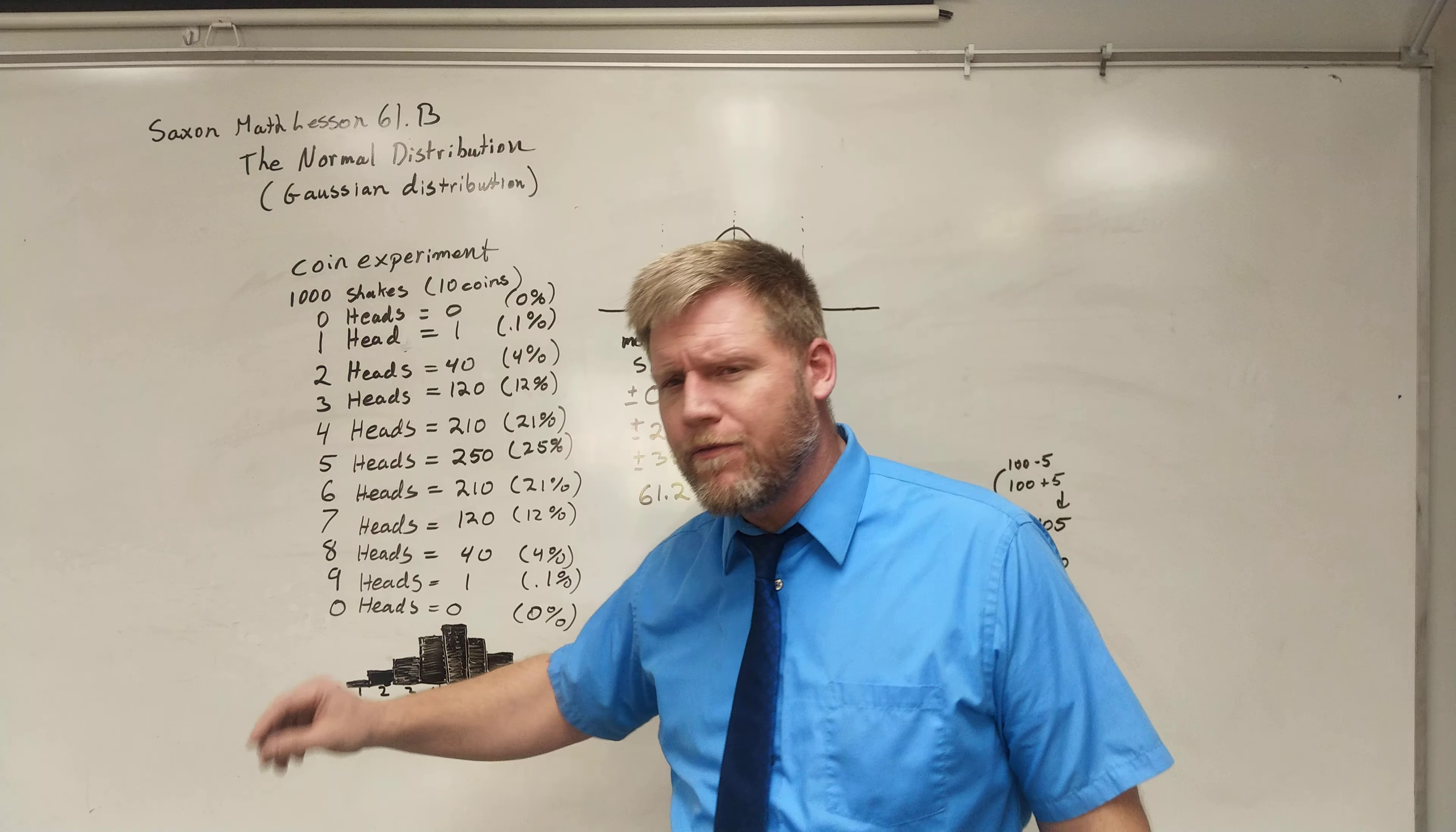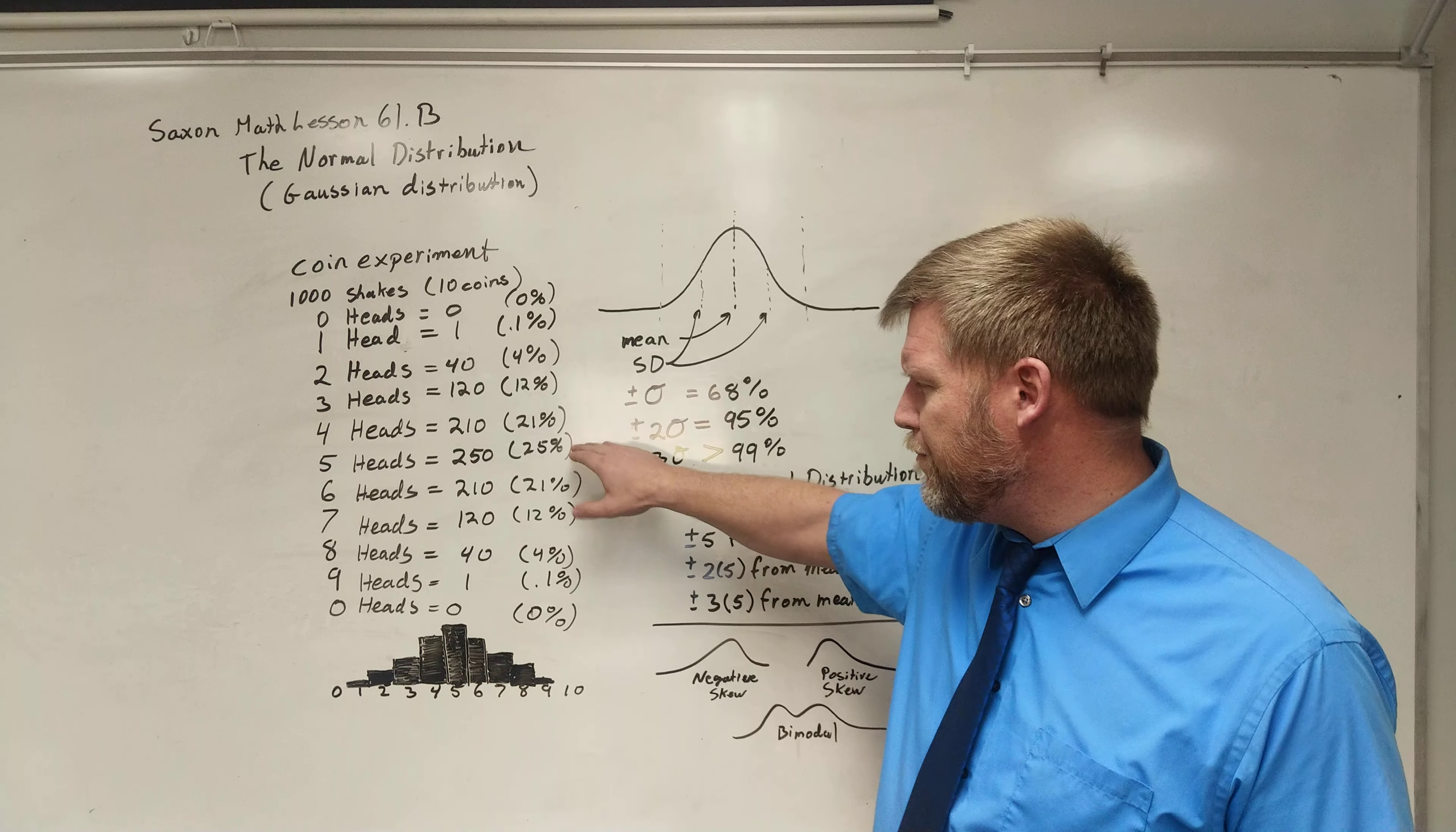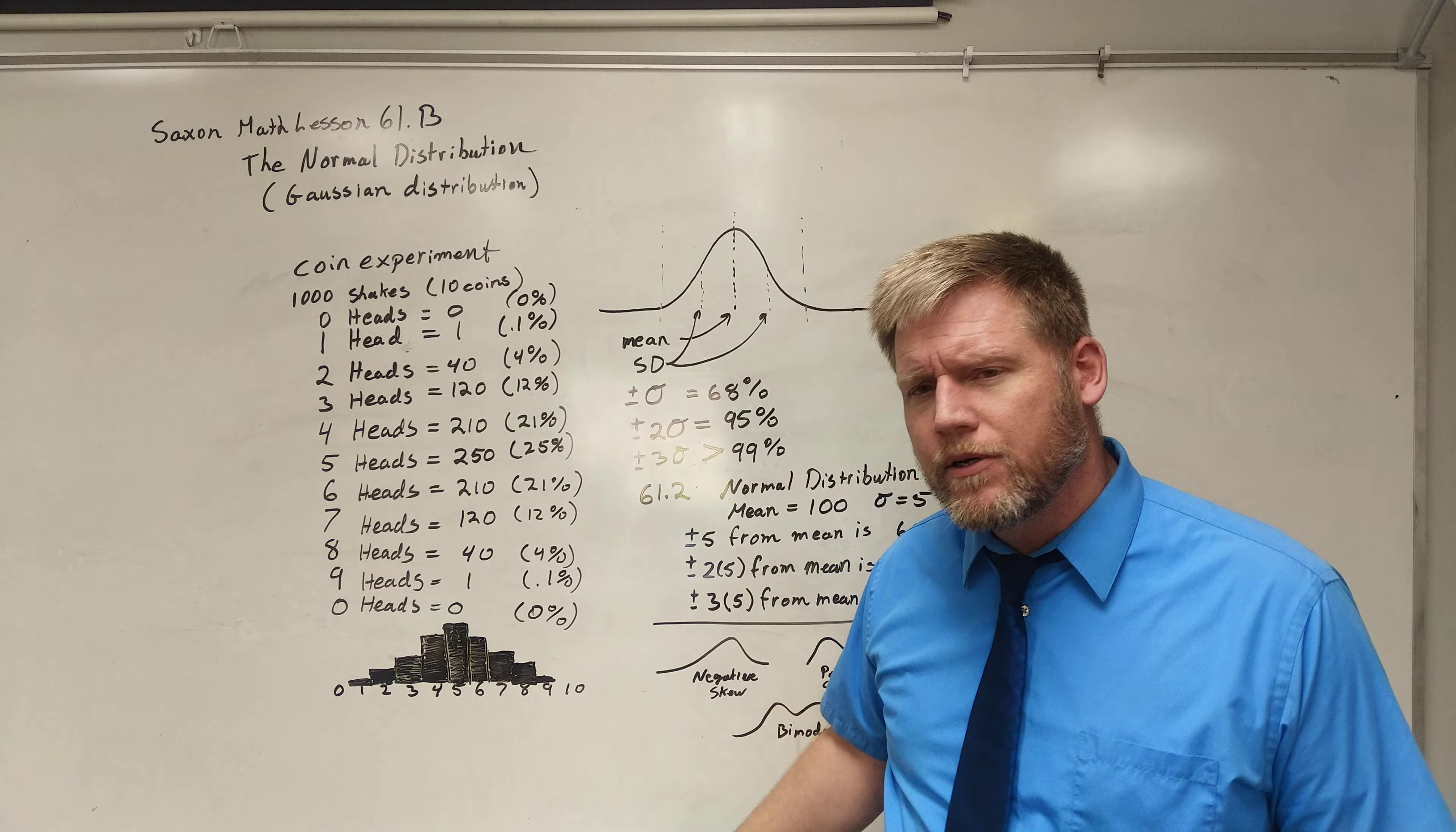If I graph that out in a histogram, now a histogram has a couple of features to it. A histogram allows me to show a frequency distribution. How often does that occur? So if I said, 25% with five heads is most often, and that's going to be about 25%. I'm going to call this 25 percentage points. Each one of them are going to step down on either side and it's going to give me this little bump.